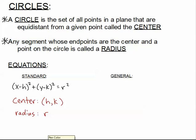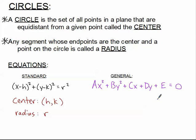When we look at general form, the general form for any conic section is Ax² + By² + Cx + Dy + E = 0, where A, B, C, D, and E are all real numbers. What makes this general form a circle is when A and B are exactly the same and cannot equal zero. So when the coefficients of your x² term and y² term are exactly the same numbers, you must have a circle.